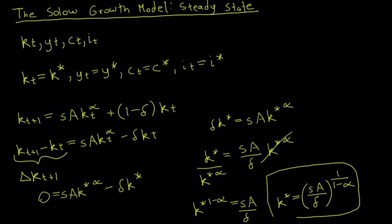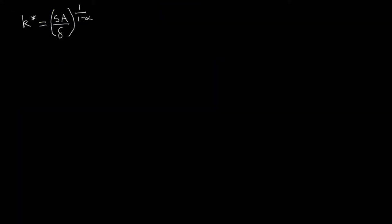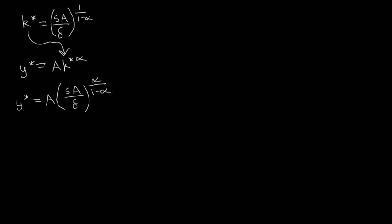Using K star, we can find the steady state values of GDP per capita, consumption per capita, and investment per capita. In the Solow model, GDP is determined by the Cobb-Douglas production function with constant returns to scale. Evaluating at steady state: Y star equals A·K star^α. Plugging in K star gives Y star equals A·(S·A/δ)^(α/(1−α)).